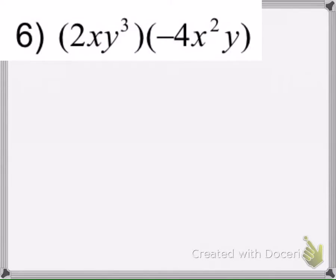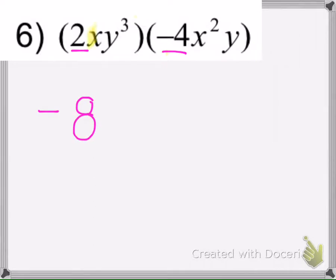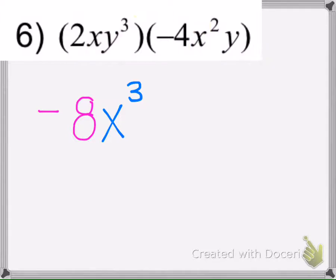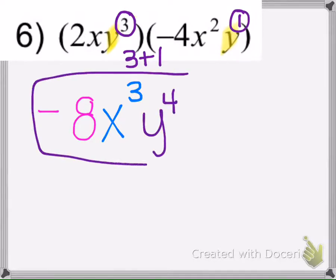Example 6: two parentheses touching means multiplication, so we use the product rule. The coefficients are 2 and negative 4, giving negative 8. We have an x and an x, so we add 1 plus 2 to get x cubed. We also have y's, so we add 3 plus 1 to get y to the 4th. Final answer: negative 8x cubed y to the 4th.